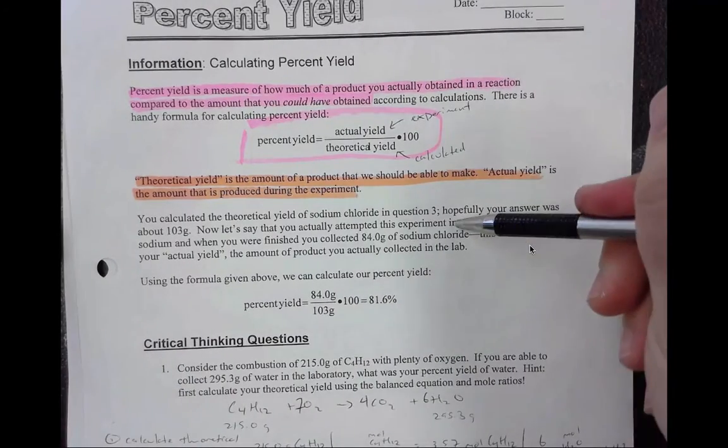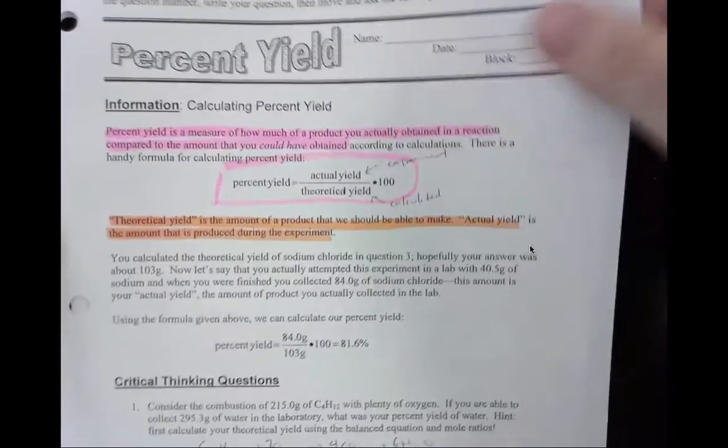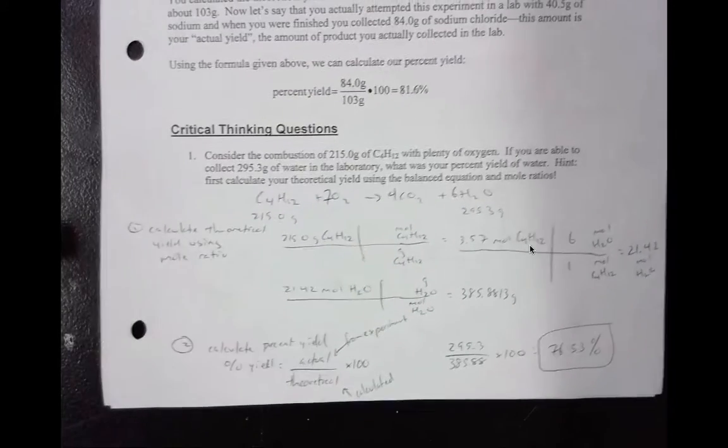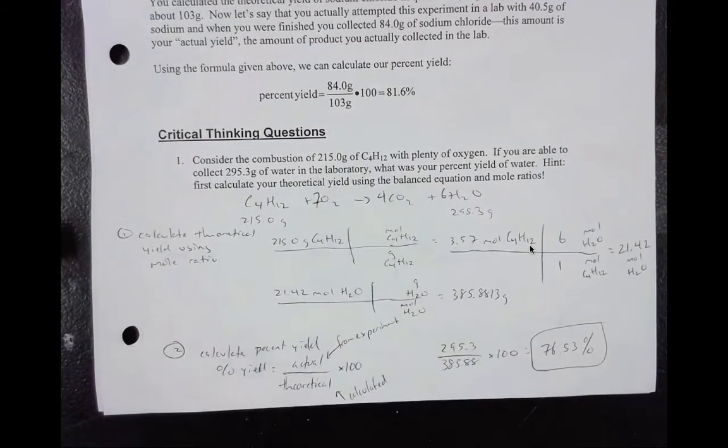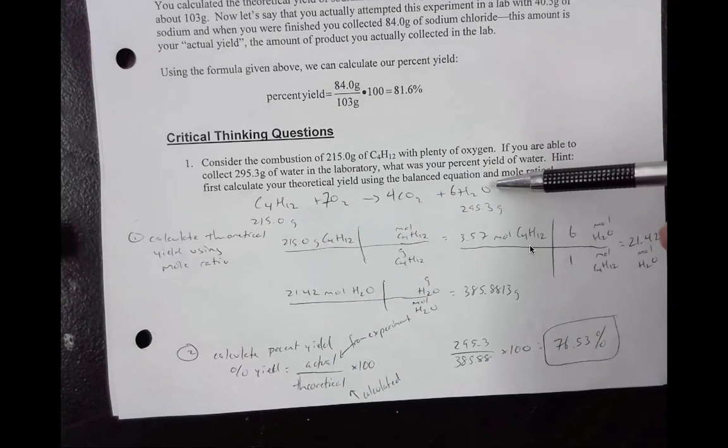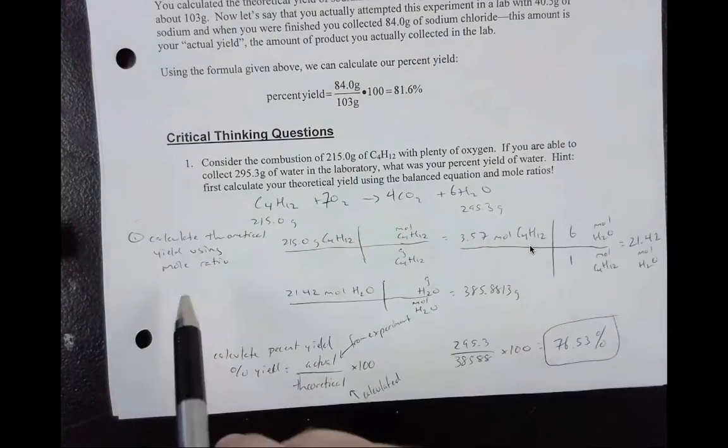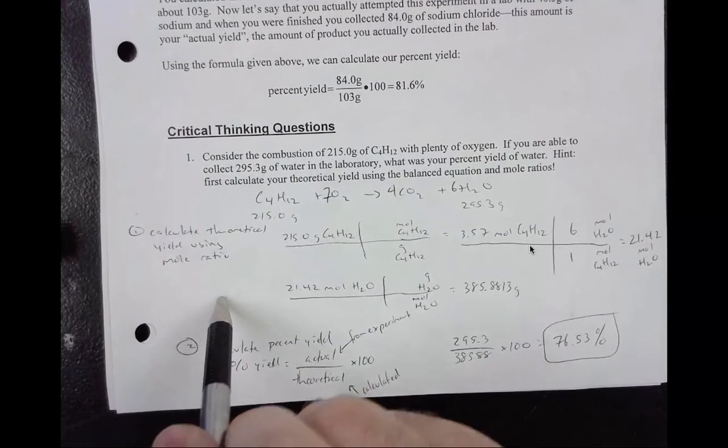That is told to you right here in the orange. Right here they provide you with an example. However I'm going to walk through questions 1 and part of question 2 with you. So it tells you you're going to have C4H12 reacting with plenty of oxygen. So we know this is a combustion reaction so we complete and balance it. This is your complete and balanced reaction. So the first thing you need to do is calculate the theoretical yield using the mole ratio.